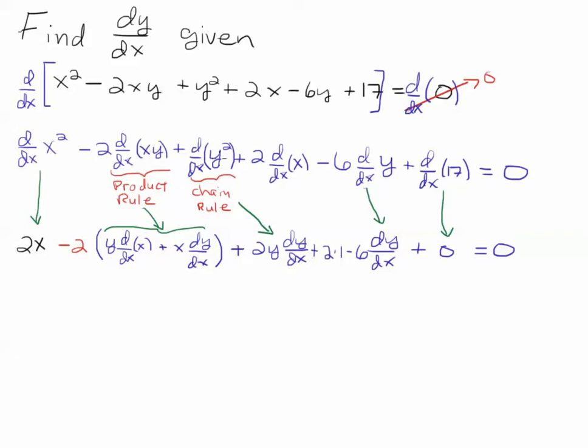Then plus the derivative of y squared, the 2 becomes the coefficient. I subtract 1 from the exponent, and so I get a 1 there. And then I have to take the derivative of the inside function, which is dy/dx.